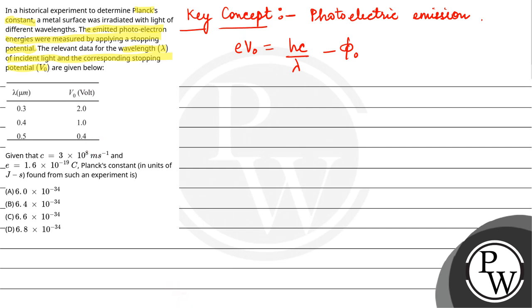Let's take value one. When λ is 0.3 micrometer, V₀ is 2 volts. When λ is 0.5 micrometer, stopping potential is 0.4 volt.